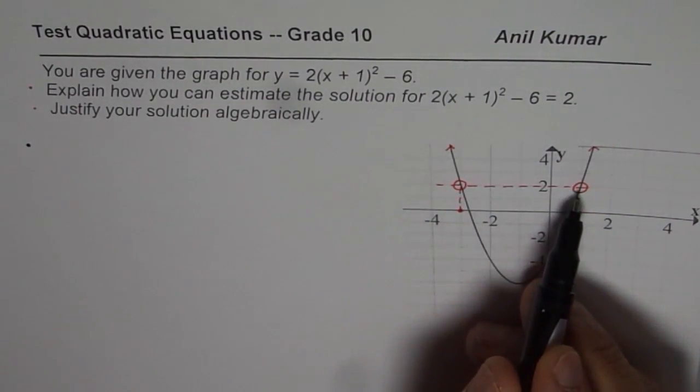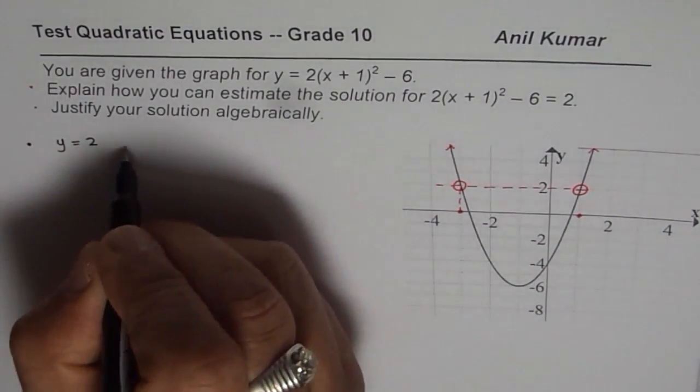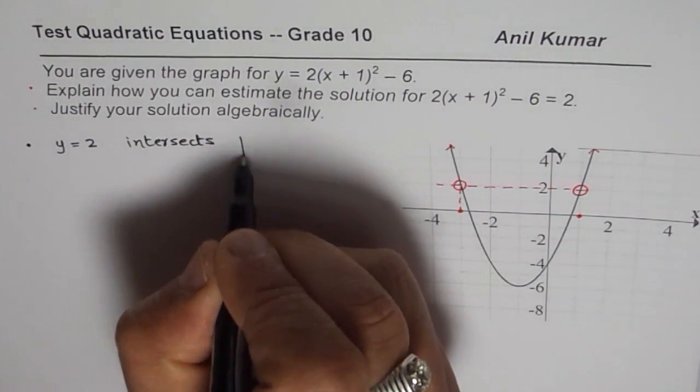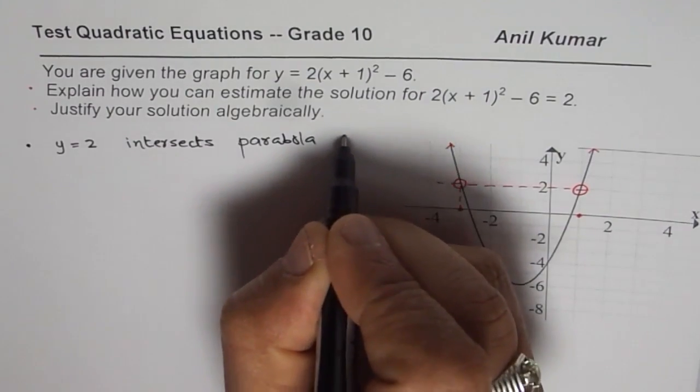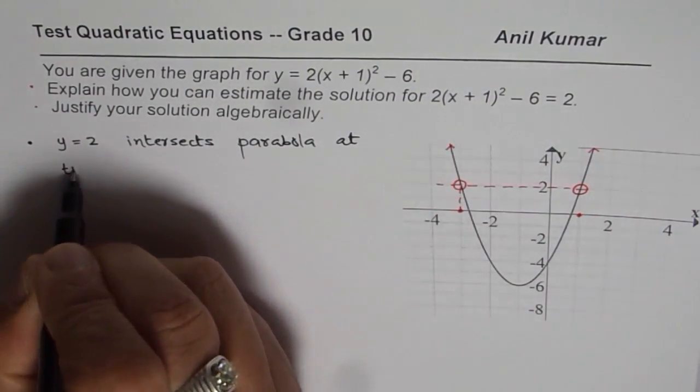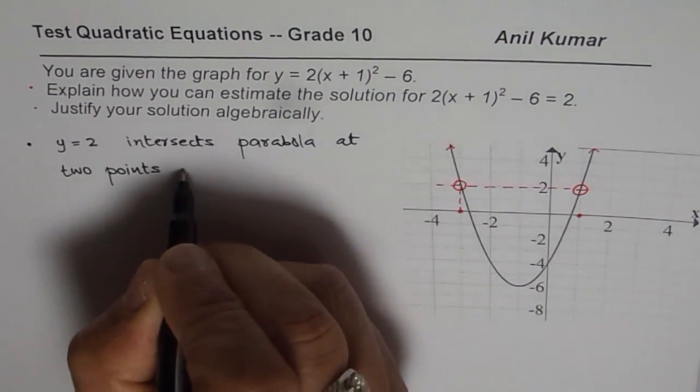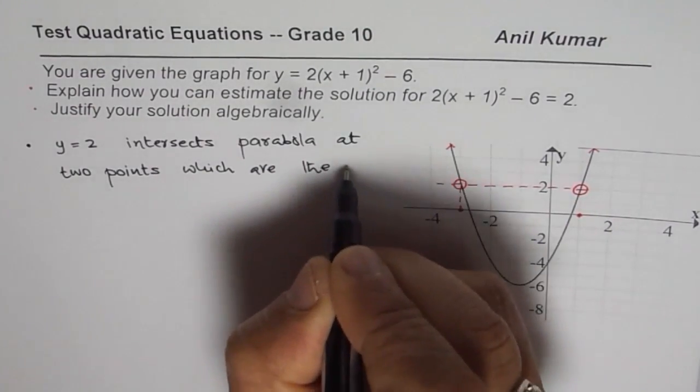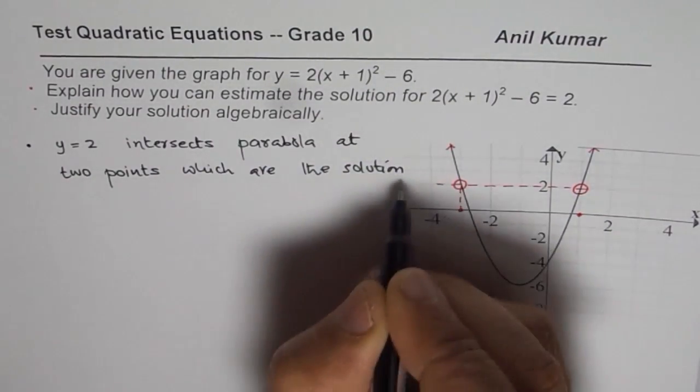Draw a horizontal line, y equals to 2. So y equals to 2 intersects parabola at two points, which are the solution.